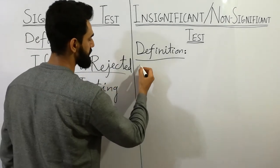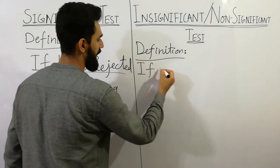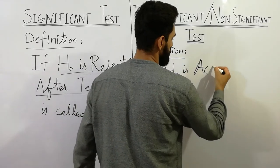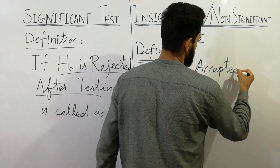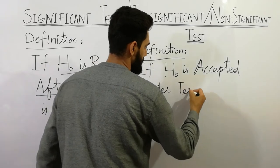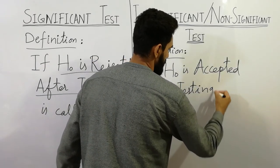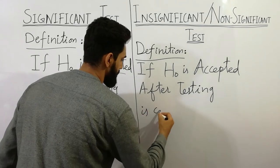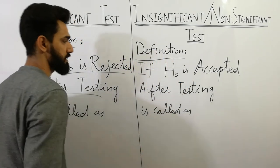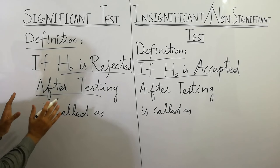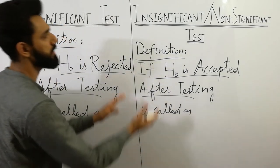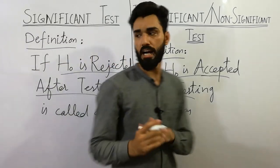Alternatively, if H₀ is accepted after testing, it is called as insignificant test or non-significant test. Very simple: if H₀ is rejected after testing, that's significant test; if H₀ is accepted after testing, that's insignificant and non-significant test. I hope that you have understood the definitions.